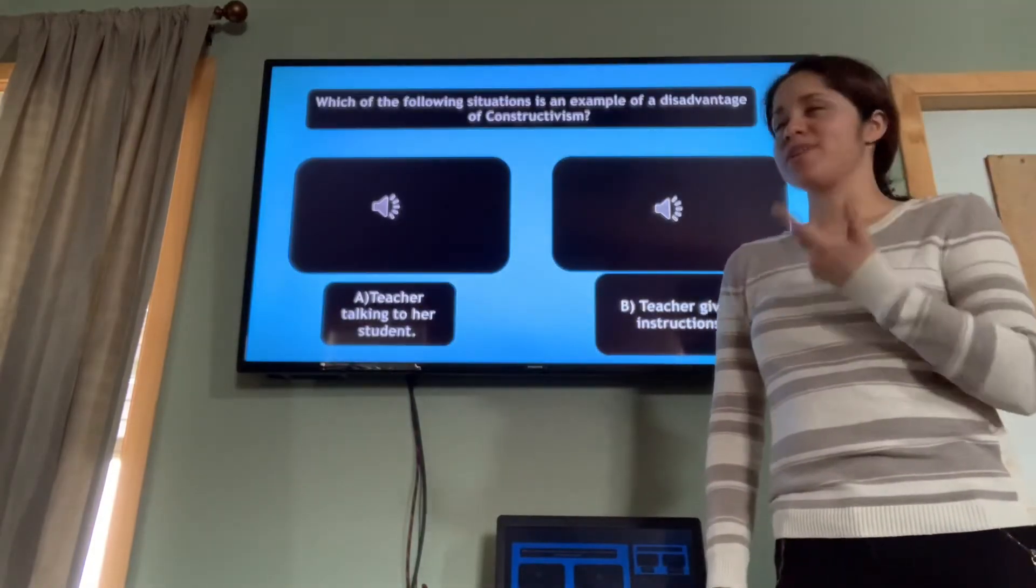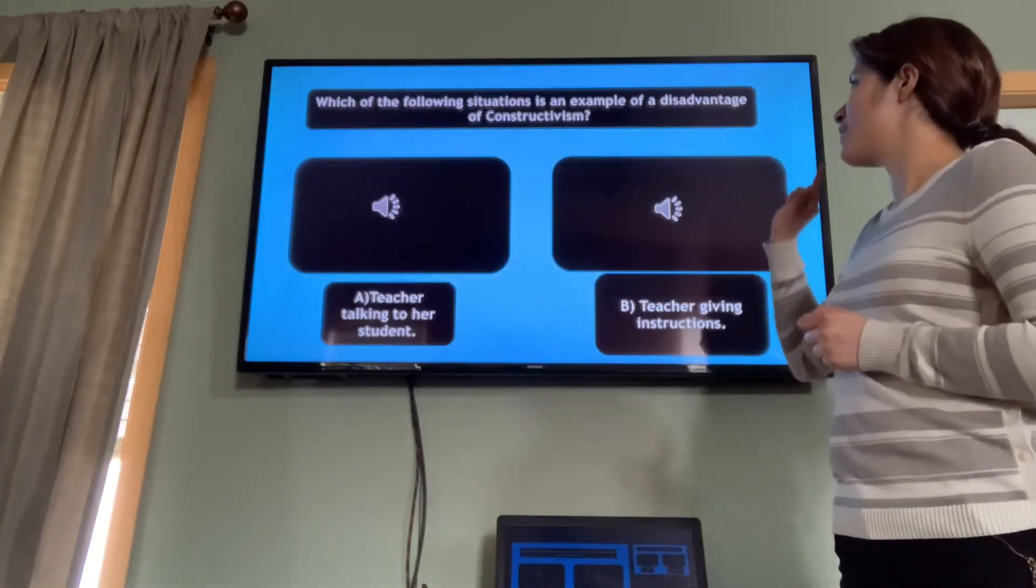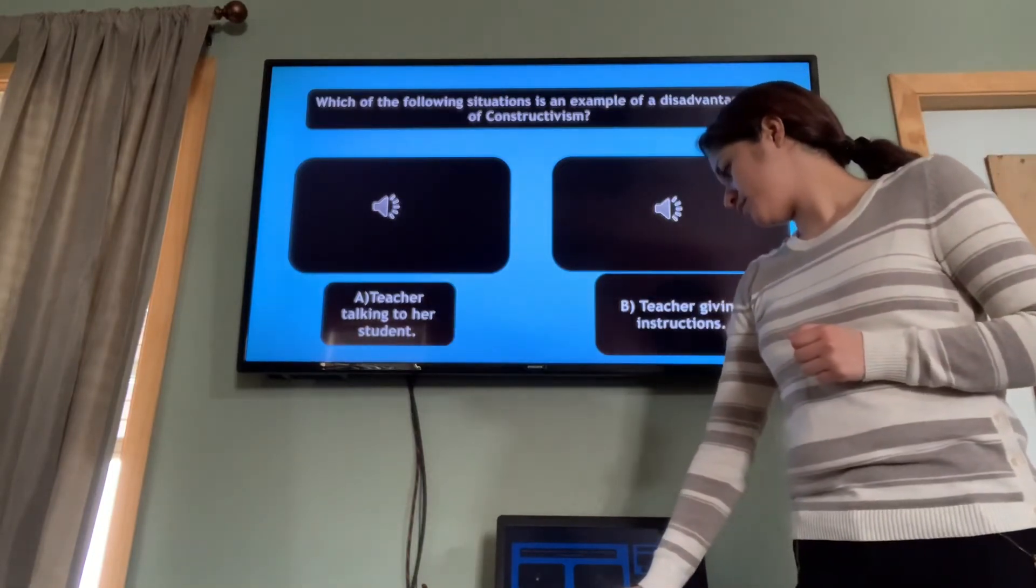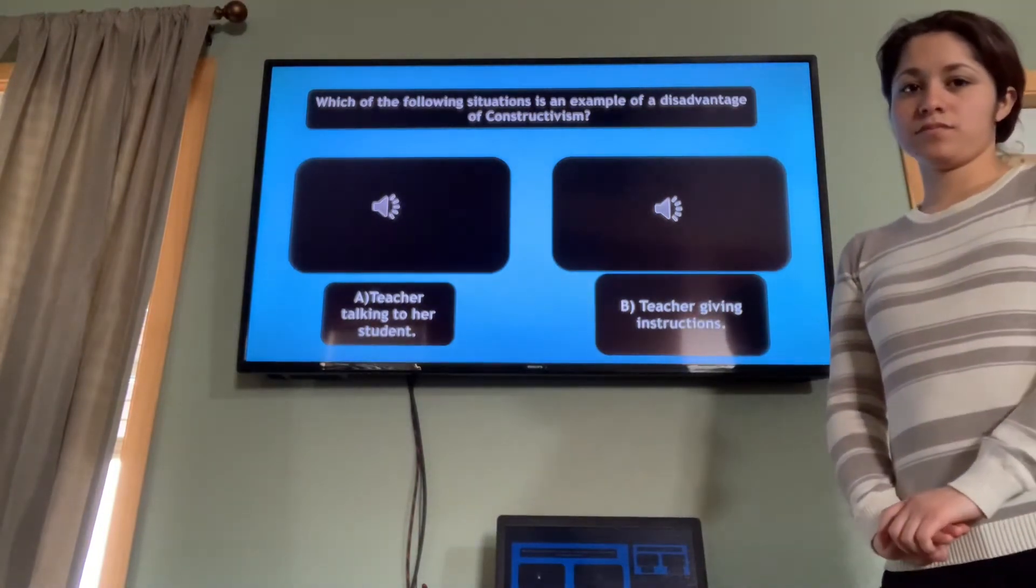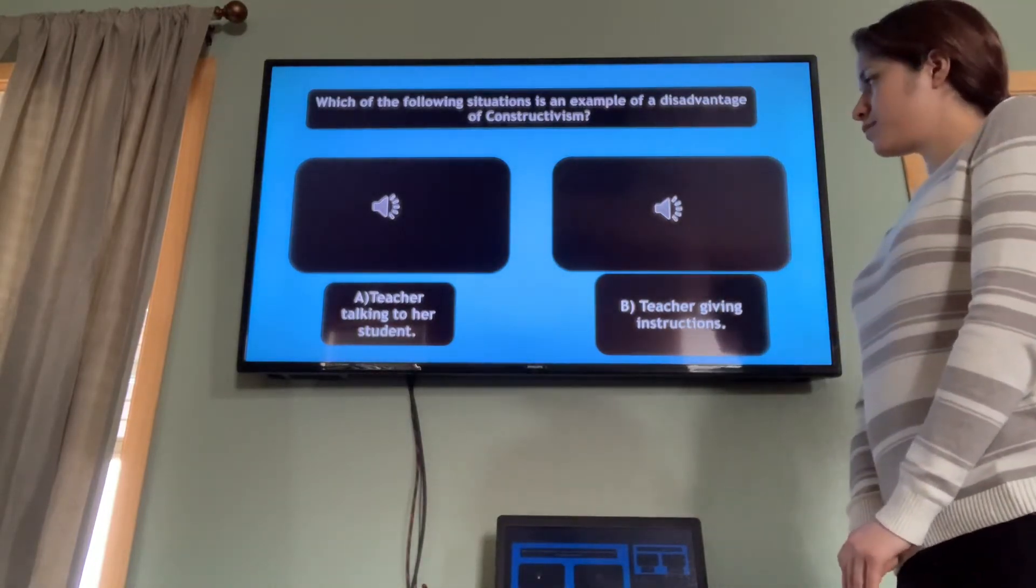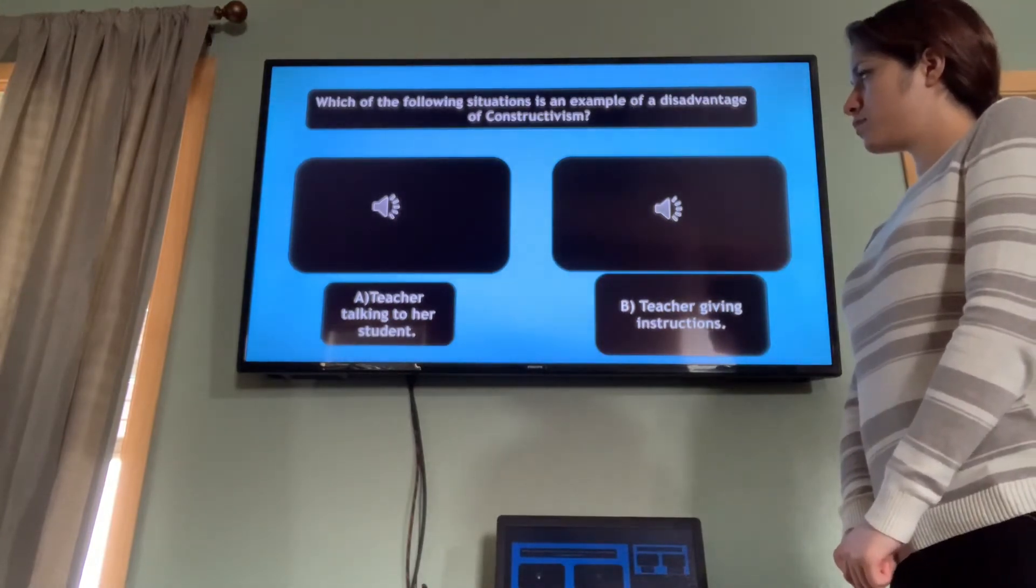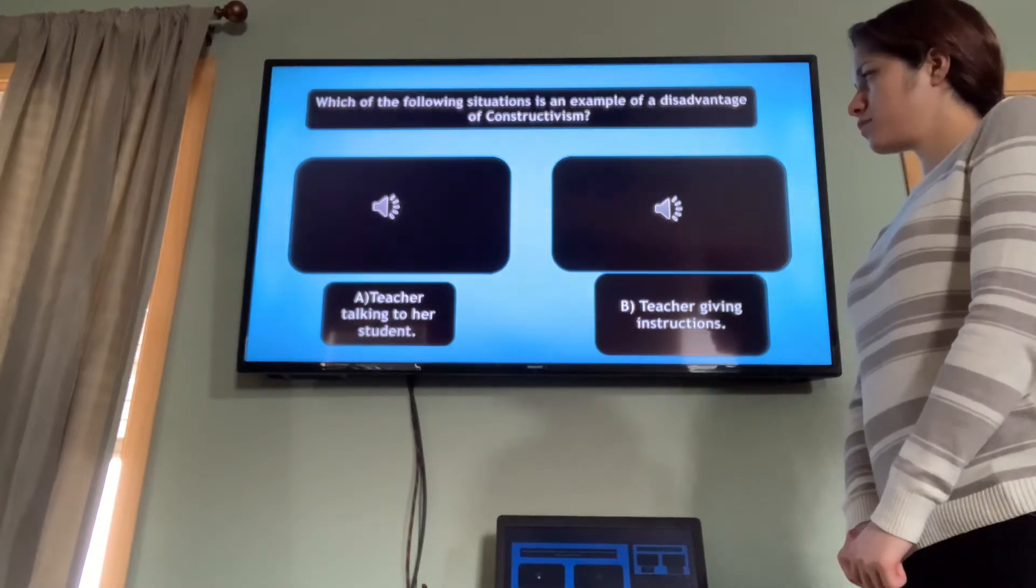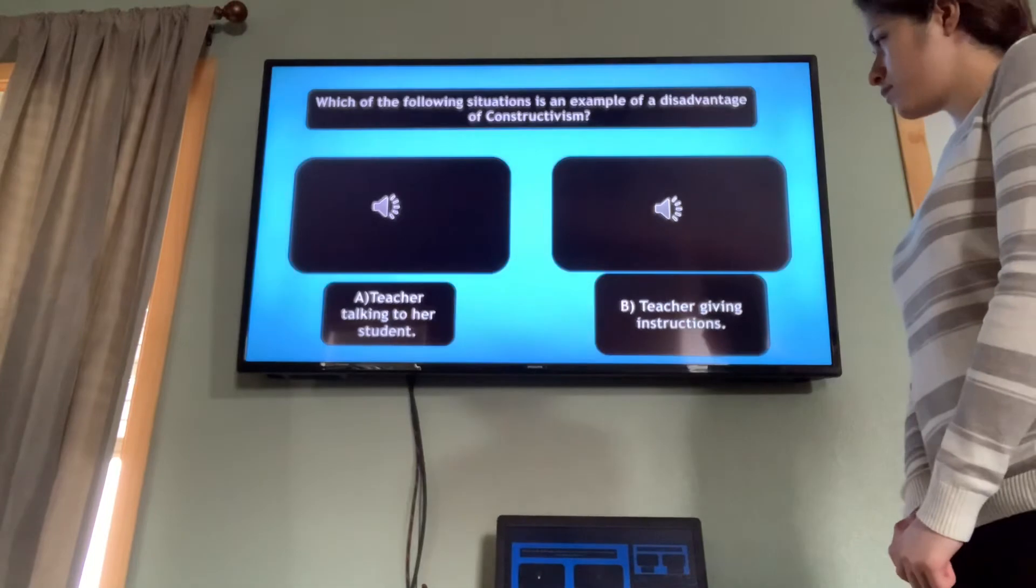According to what I already said, which of the following situations is an example of a disadvantage of constructivism? Option A: John, I would like to tell you something today. I have noticed that you are getting low grades in my subject. I am providing you all the materials that you need. Your classmates are doing really well. You are the only one who is not. So, I am just telling you, you need to be a self-learner and it means you need to be independent.